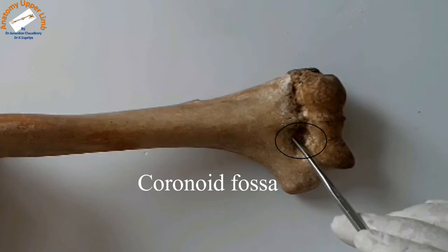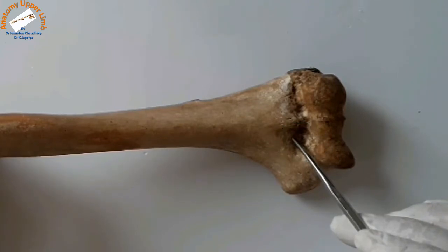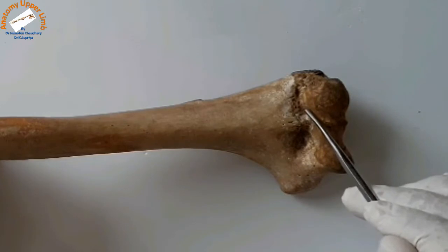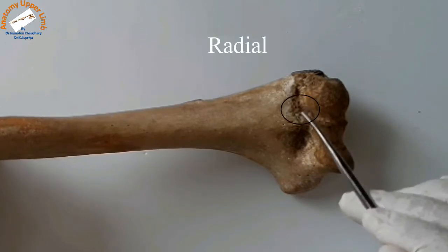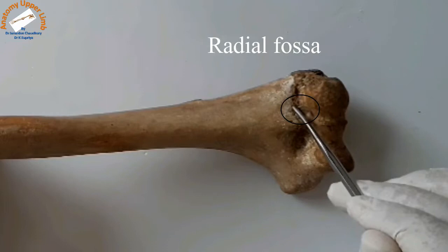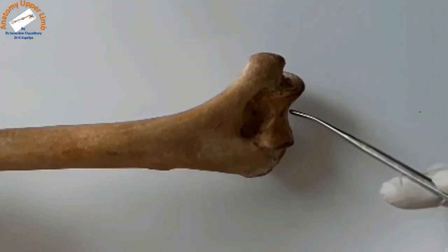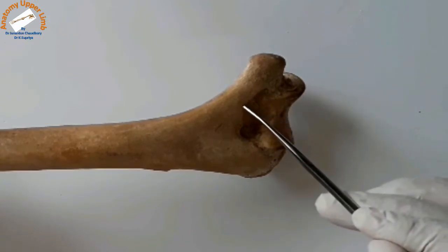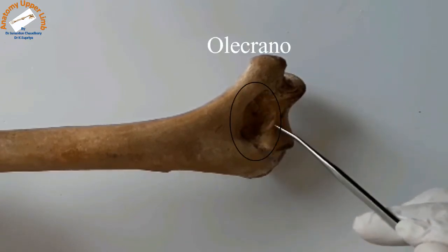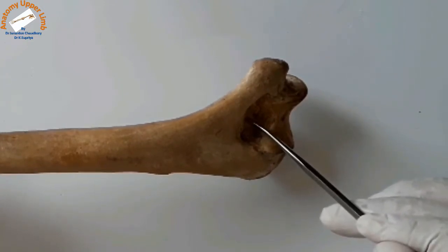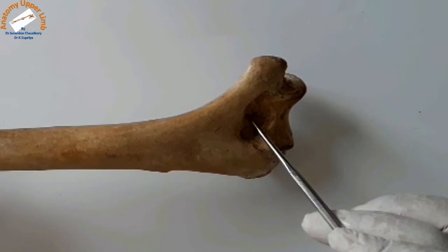The medial fossa is called the coronoid fossa because, on full flexion at the elbow joint, it gives lodgment to the coronoid process of the ulna. Laterally there is a smaller fossa which, on full flexion, gives lodgment to the head of the radius. Posteriorly, above the articular surface, there is a larger triangular fossa called the olecranon fossa, because it gives lodgment to the olecranon process of the ulna.